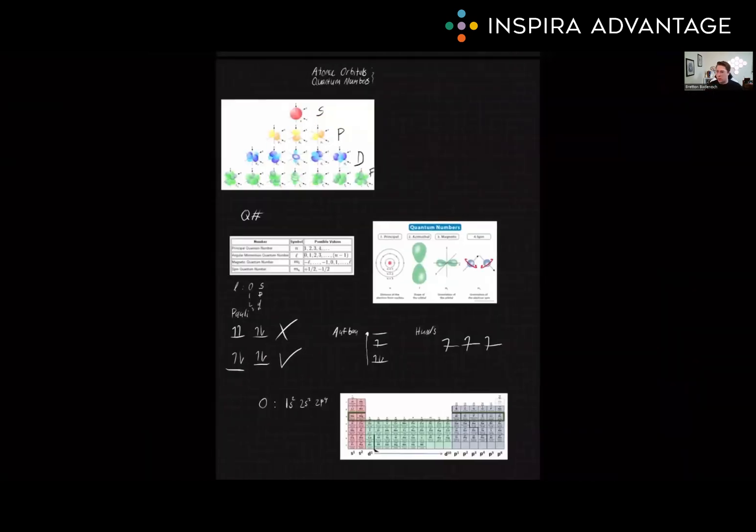So what type of problems can this help you with? Understanding atomic orbitals and quantum numbers will definitely help you with periodic trends, understanding that elements in the same group have similar electron configurations, which can help explain trends in atomic size and ionization energy.